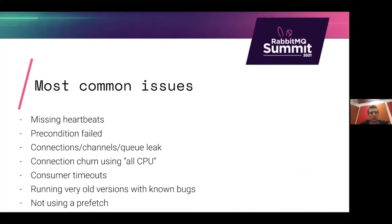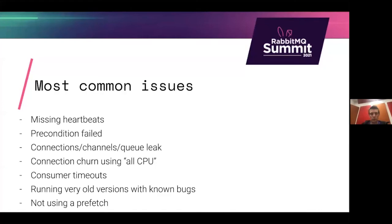We talked about rare issues, but what are the most common ones? Starting from the bottom: not using a prefetch. This is kind of a bad default in many clients — not setting a prefetch can cause additional RAM usage on the server, or more likely clients crashing and then restarting with unlimited prefetch again, just looping like that.